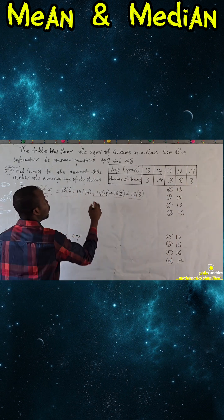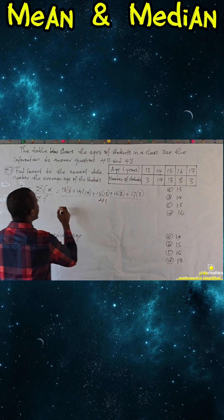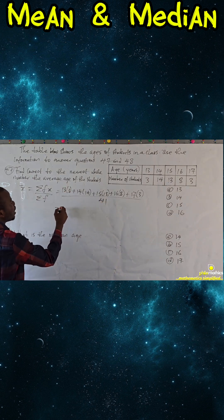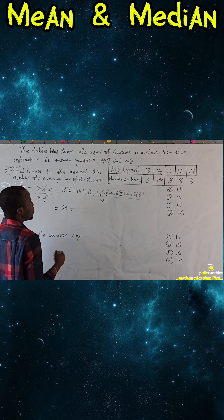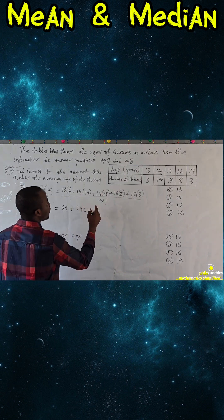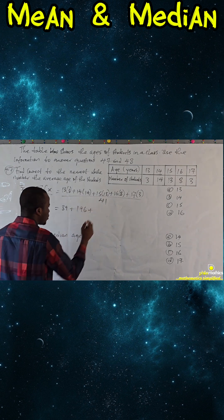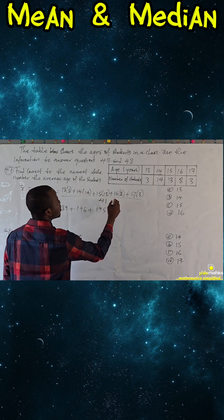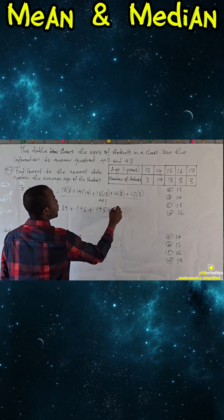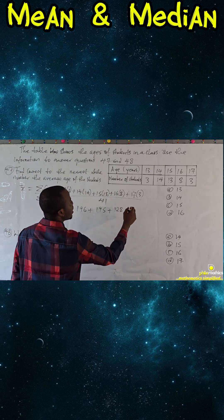If we times this, this is 39, plus 14 times 14 is 196, plus 15 times 13 is 195, plus 16 times 8 is 128, 17 times 3 is 51.